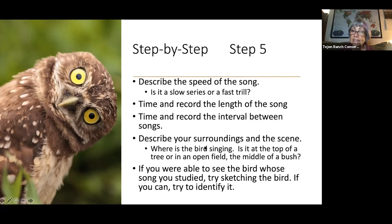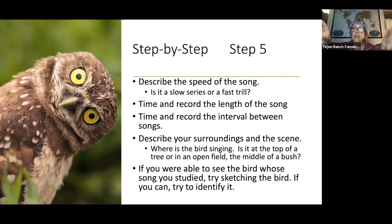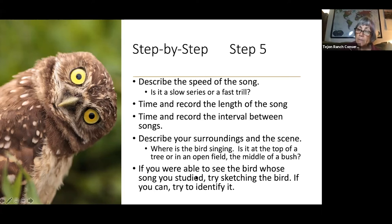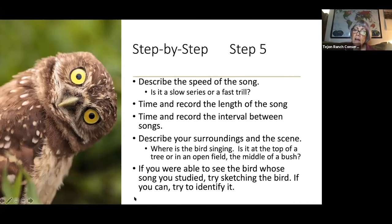Then I want you to describe your surroundings and the scene. Where is the bird singing? Is it at the top of a tree, in an open field, in the middle of a bush? Birds sing for many different reasons — some sing for territory. Is it standing in the highest spot where it can defend its area, or is it in a hidden place where it feels safe? Describe where that bird is as it's singing, because birds will move around and be quiet in some spots and sing in others. And if you were able to see the bird whose song you studied, go ahead and try sketching it. We've already practiced fast sketching, so go ahead and do that. Later on you can try to identify the bird, but today we're focused on learning how to listen and transcribe what we're hearing.